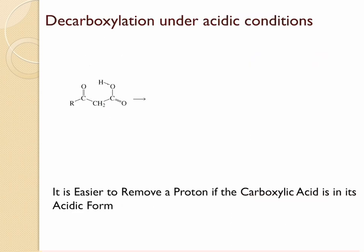Decarboxylation can be even easier under acidic conditions because there can be intramolecular proton transfer, where this oxygen pulls this hydrogen. These electrons come in to form a double bond, eliminating the carbon dioxide molecule, while the pi electrons abstract this hydrogen to form the hydroxy group. This gives an enol, which can undergo keto-enol tautomerization to give the most stable keto form.